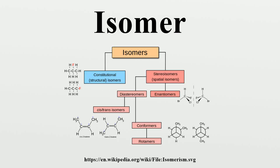Jöns Jacob Berzelius introduced the term isomerism in 1830 to describe the phenomenon. In 1848, Louis Pasteur separated tiny crystals of tartaric acid into their two mirror image forms. The individual molecules of each were the left and right optical stereoisomers, solutions of which rotate the plane of polarized light to the same degree but in opposite directions.